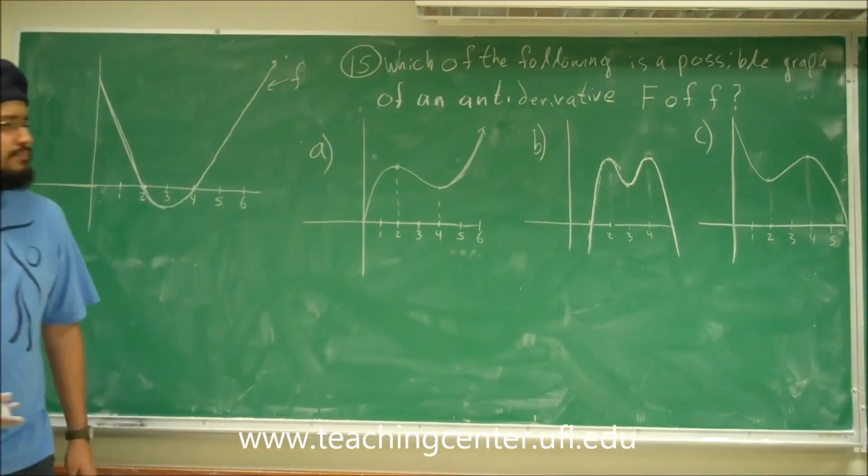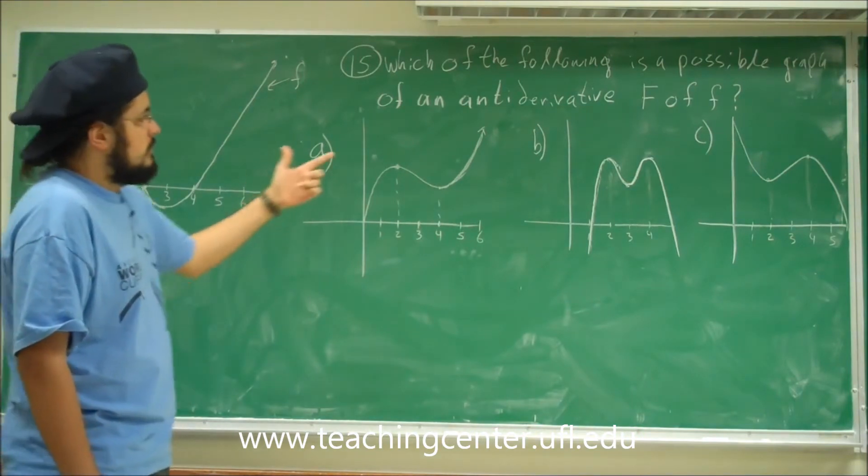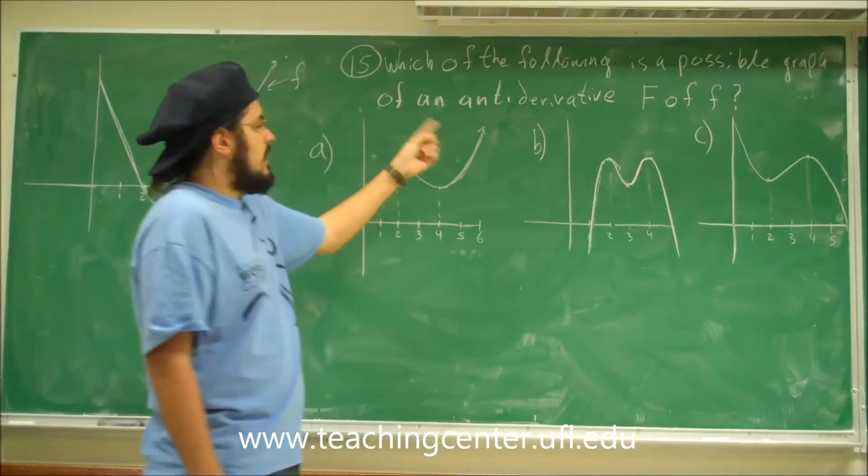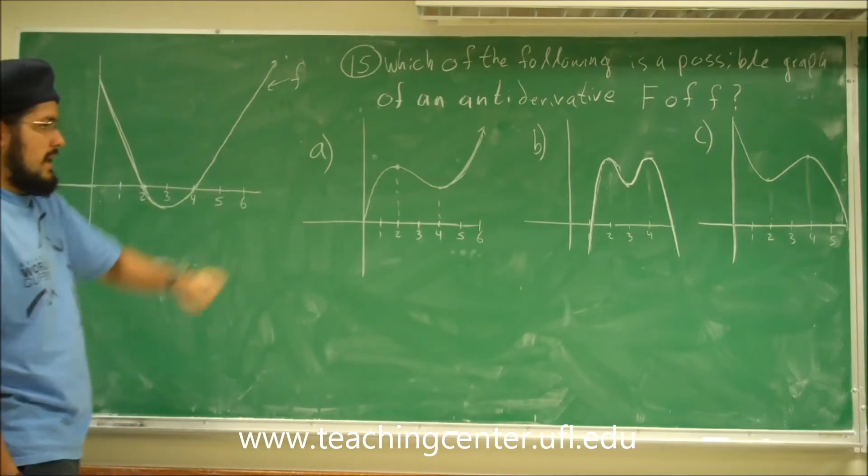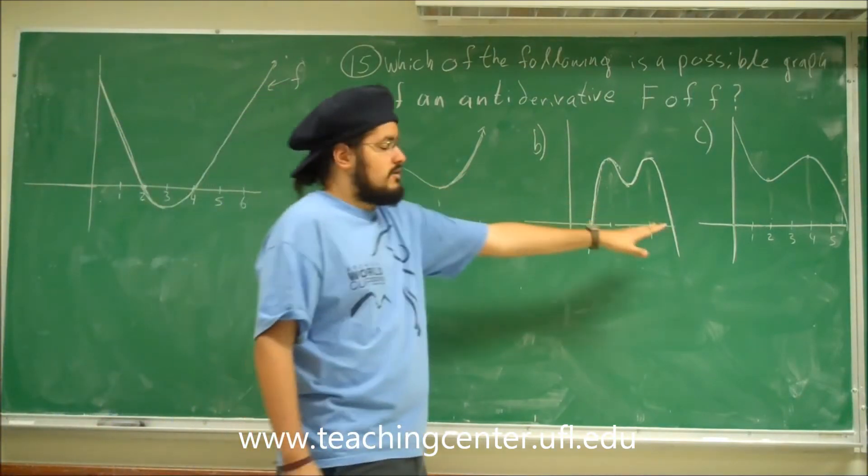Alright, so this is problem 15. Problem 15 is pretty much, they give you this graph, this graph is f, it looks something like this. And then it asks, which of the following is a possible graph of an antiderivative F of the small f? So here's a, b, and c, these are the possible choices.